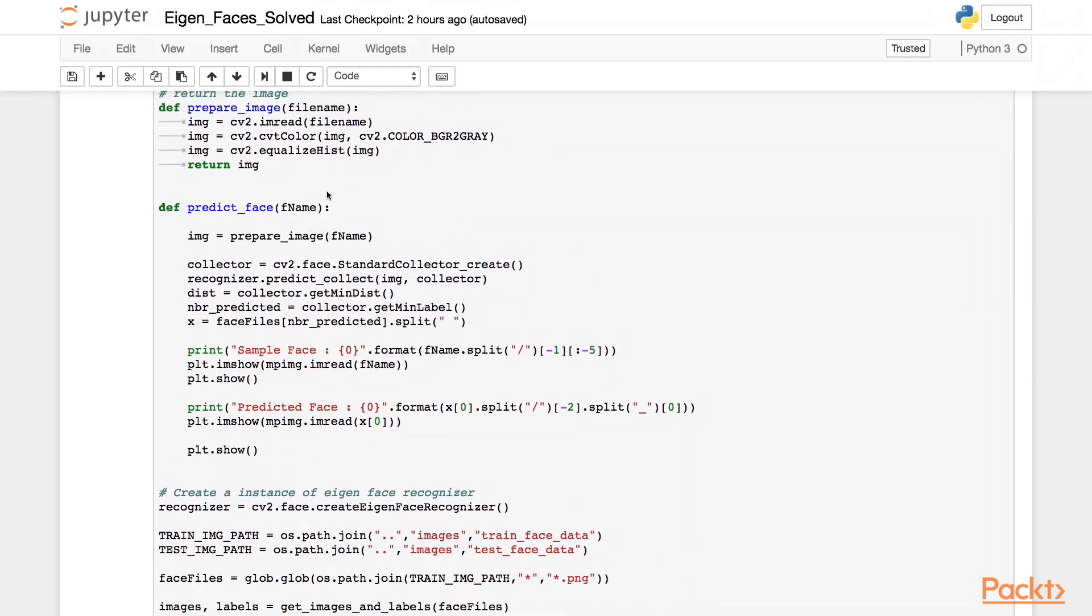Predict face takes each test image and calls the prepare image function on each test image, which gives us a histogram equalized grayscale image. Then we initialize a collector by calling standard collector create of the face module, and pass it to the predict collect method of the recognizer object. We are interested in getting the minimum label of the image that has the minimum distance with one of the training images. We save the label into a variable called NBR, and then we display the input test image, the predicted image, and its label.